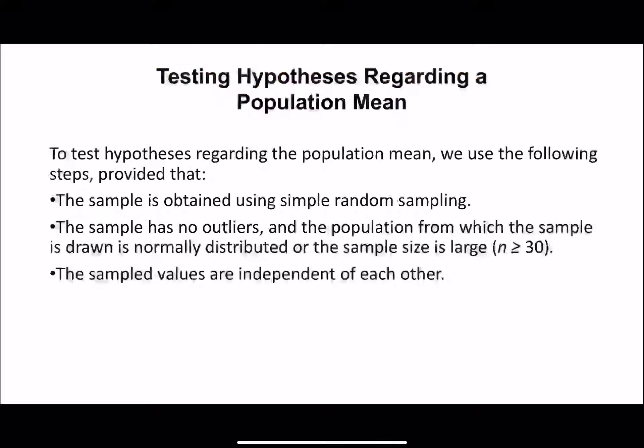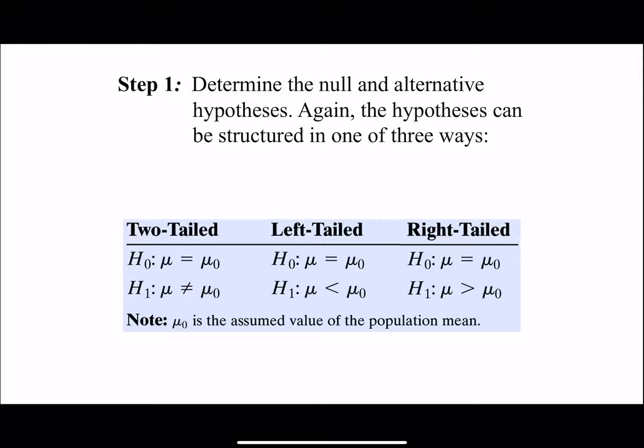When testing a hypothesis regarding a population mean, we need to make sure we are using a simple random sample, there are no outliers, and the population is normally distributed or our sample size is larger than 30. If the population is normally distributed we don't need to worry about sample size, but if we don't know, sample size must be larger than 30. The sample values must be independent of each other - that means five percent or less of the population.